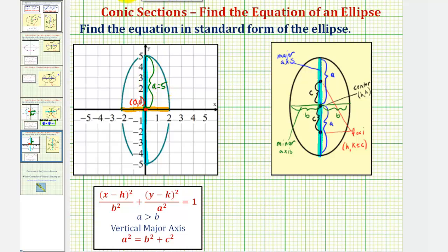And the length of the minor axis is equal to two B, or we can say the distance from the center to one endpoint of the minor axis is B. So in our case, we can say that B equals two.